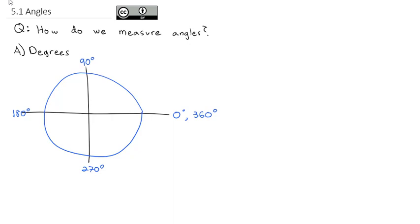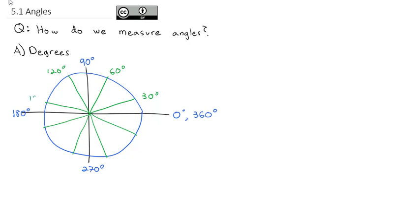Another way we've divided up the circle is we can divide each of these quarters into thirds, giving us points around the circle. These are going to be some common angles we'll work with. One third of 90 degrees is 30 degrees, so each spoke is 30 more degrees: 30, 60, 90, 120, 150, 180, 210, 240, 270, 300, 330, and 360.